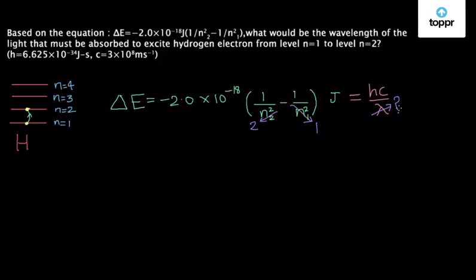Now let's simplify the equation by putting all the values in, and what we get is the value of lambda. Lambda equals 1.325 times 10 to the power minus 7 meters. This is the value of our lambda, which is our answer.